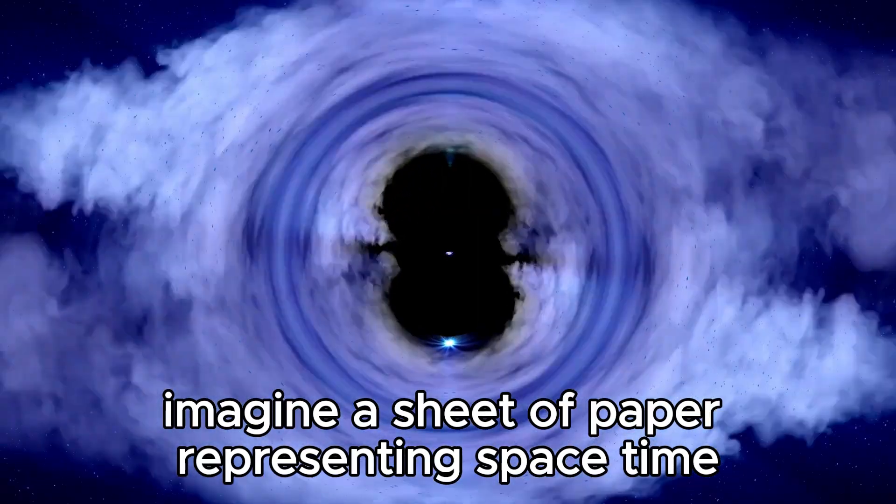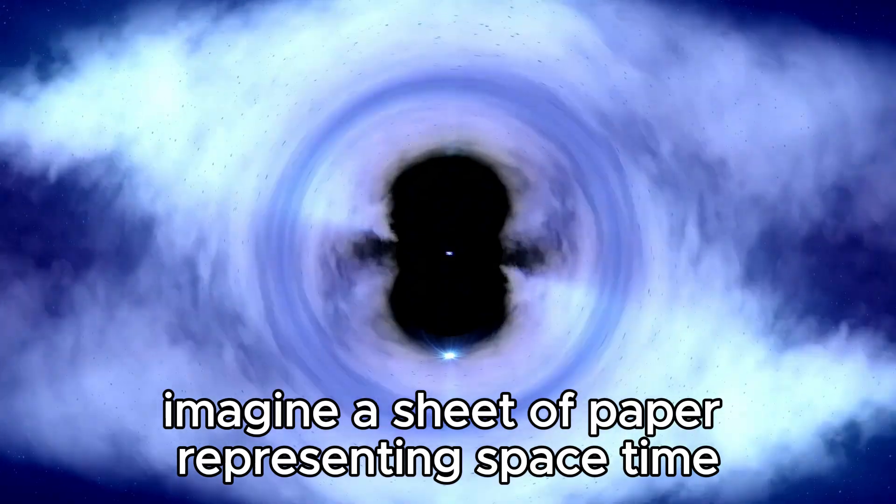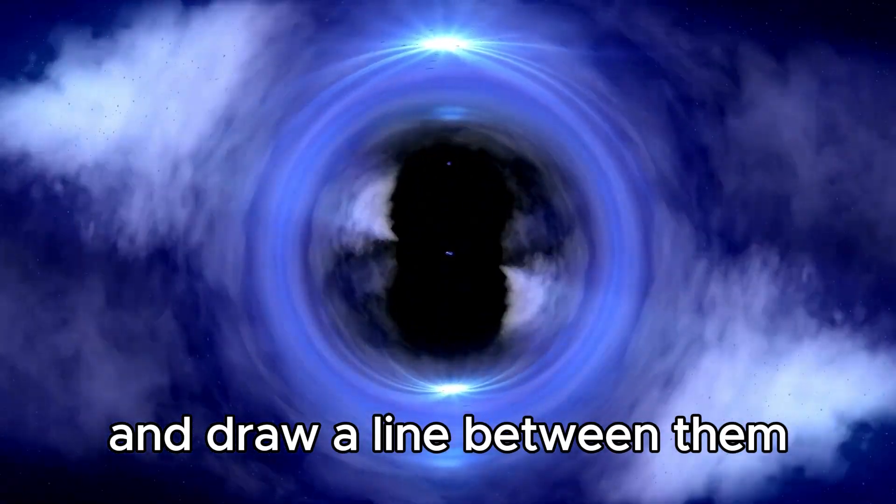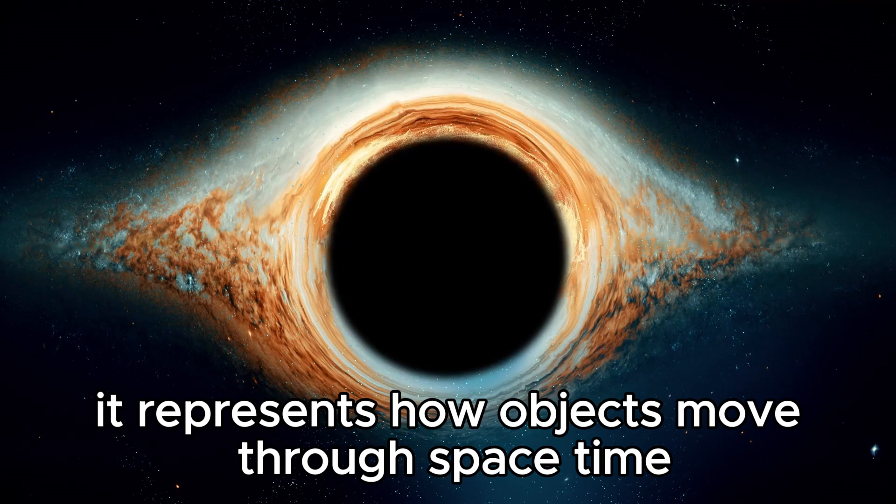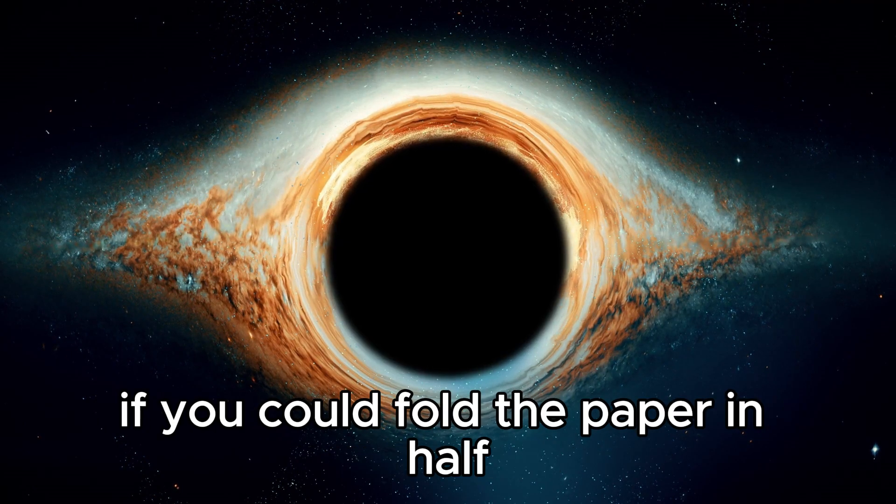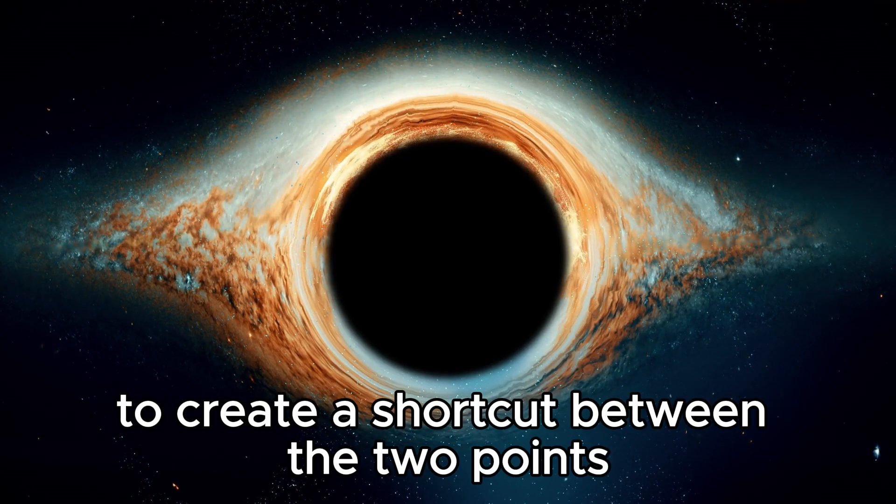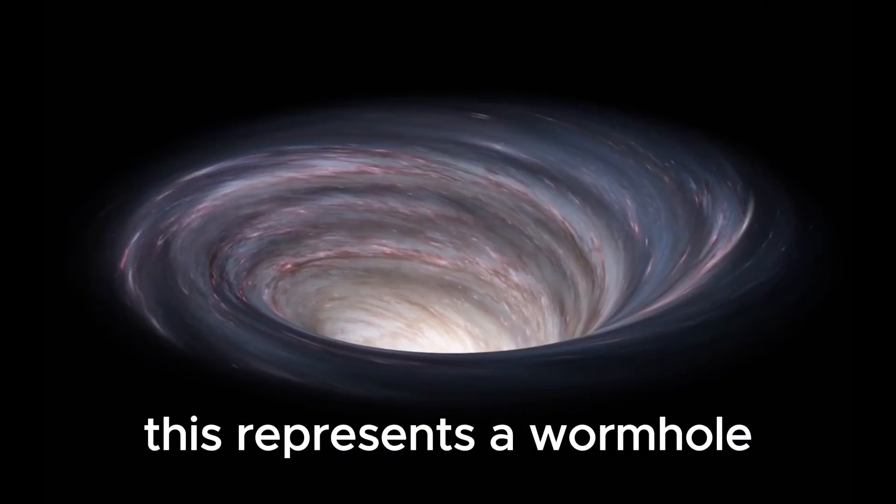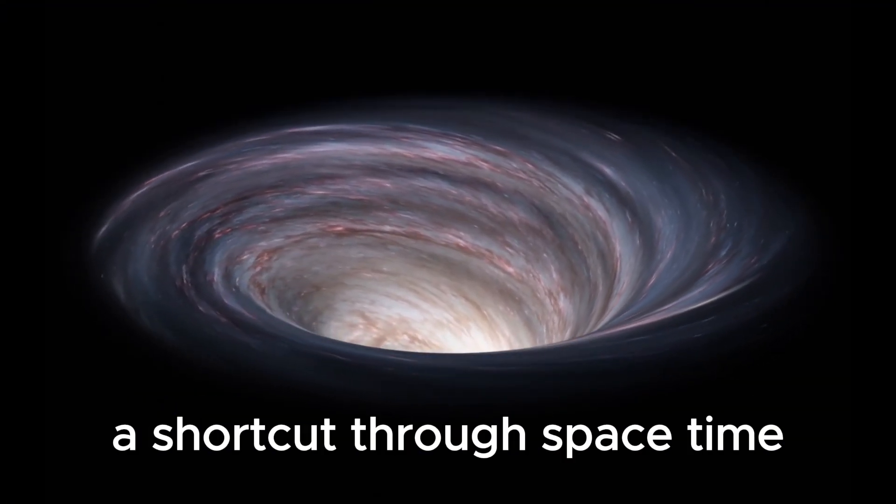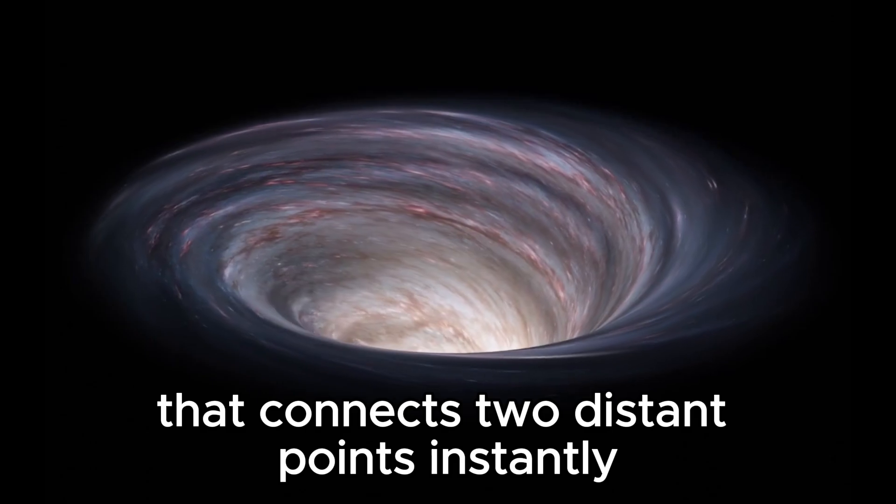Imagine a sheet of paper representing space-time. If you place two points on the paper and draw a line between them, it represents how objects move through space-time. If you could fold the paper in half to create a shortcut between the two points, this represents a wormhole, a shortcut through space-time that connects two distant points instantly.